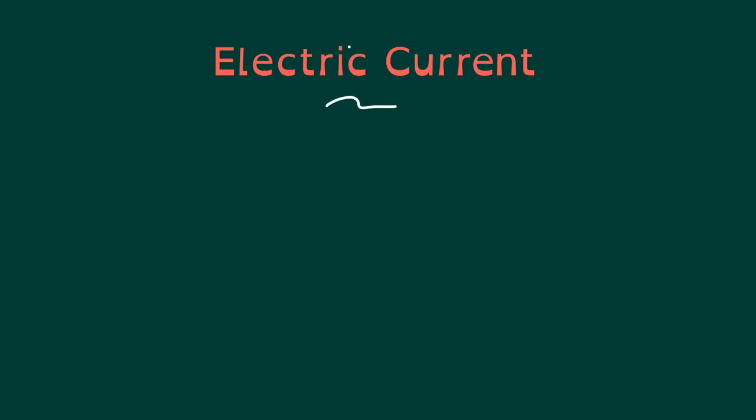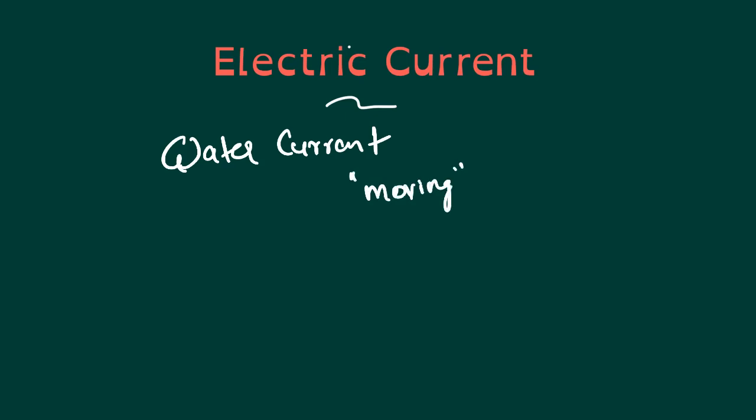Hi friends, we are starting our lessons on electric current. What is current? We can look at water current and air current — flowing air is called air current. So something moving is called current. When electricity is moving, it is called electric current.